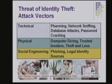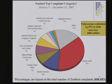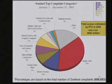In the technical aspect, you have pharming, network sniffing, keyboard loggers, and database attacks. On the physical side, not enough people are shredding their mail, so you have dumpster diving, trusted insiders, theft, and loss. In the social engineering aspect, you have legal identity sources, phishing, and family members trying to get information. A recent FTC report shows that 37 percent of the 686,000 complaints received involved identity theft — a huge and serious problem.